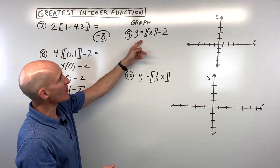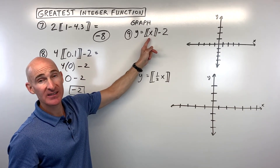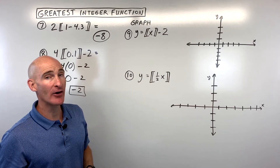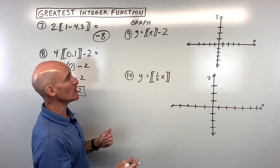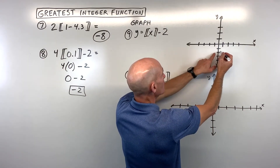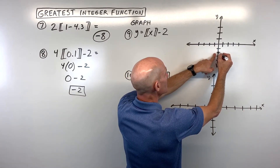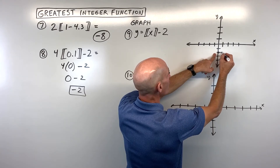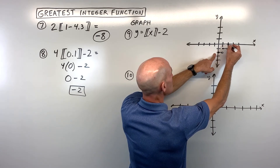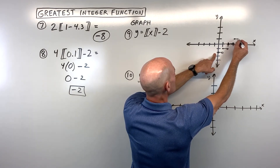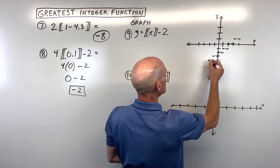For number 9, how would you graph this? The minus 2 is not grouped with the x, so it's going to affect the y values — it's going to shift the graph down 2. If you remember the basic parent function — closed on the left, open on the right, then it jumps up to the next stair — that entire pattern just shifts down 2, and you can repeat it in both directions indefinitely.